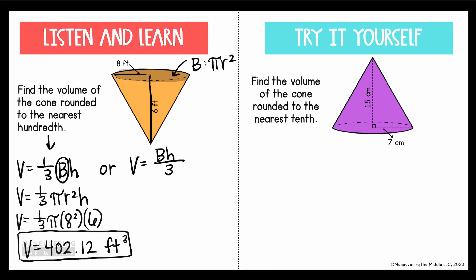Let's do the one at the right. So again, we're finding the volume of the cone, this one to the nearest tenth. Write your formula, and know that big B is found by using πr². Substitute the values that you know, the radius, which is 7, and the height, which is 15. Multiply your values together, and the volume of the cone is 769.7 centimeters cubed.